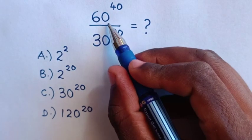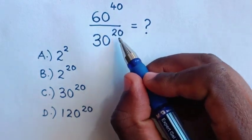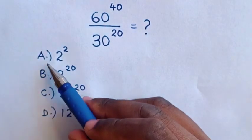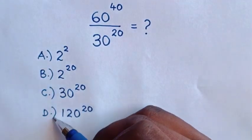Hello! How to solve 60 to the power of 40 over 30 to the power of 20? To choose between the answer A, B, C, or D.